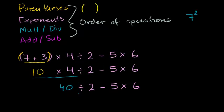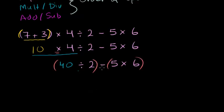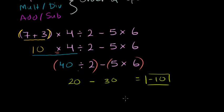So we have 40 divided by 2 minus 5 times 6. The division and the remaining multiplication are not together, so we can do them simultaneously — and they take priority over the subtraction. 40 divided by 2 is 20, and 5 times 6 is 30. So we have 20 minus 30, which equals negative 10. And that is the correct interpretation of that expression.